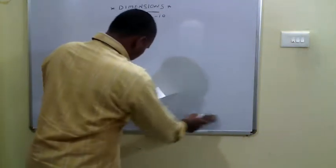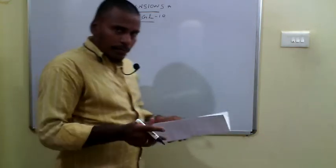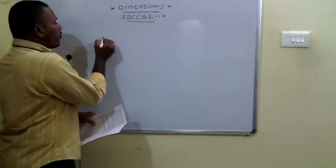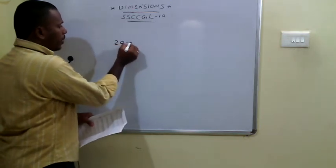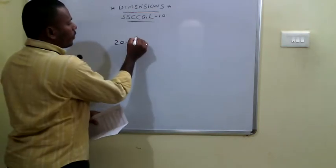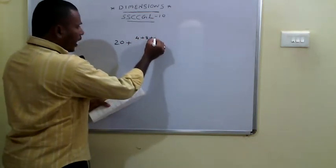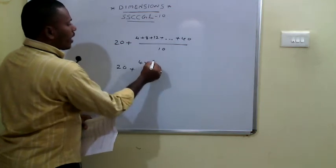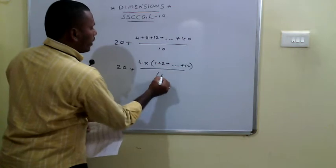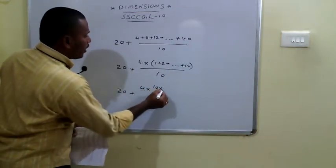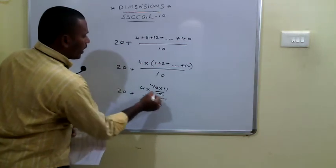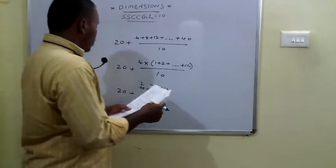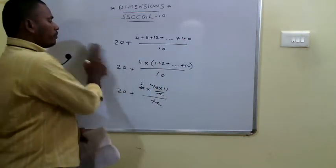The 60th problem is from averages. The mean of 10 numbers is 20, and they ask for the mean of those numbers raised by 4, 8, 12, … up to 40 (i.e., each multiplied by 4, 8, …). The additional mean is (4 + 8 + … + 40)/10 = 4 × (1 + 2 + … + 10)/10 = 4 × 55/10 = 22. So the mean becomes 20 + 22 = 42.